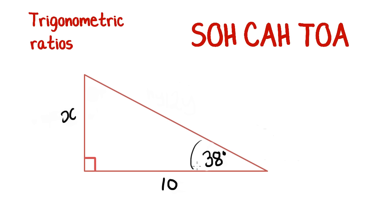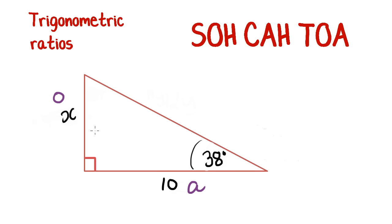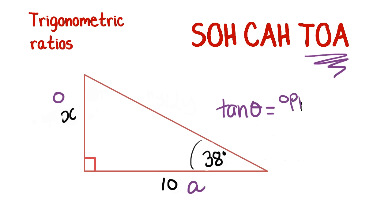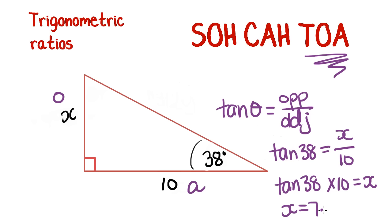Say we have an angle of 38 degrees and we're trying to find X, where the hypotenuse doesn't factor in because it's not one of our two pieces of information. The side opposite our angle is the opposite, and the other is the adjacent, so we're dealing with O and A — tangent. Tan of 38 equals X over 10, so X equals tan 38 times 10, giving X equals 7.8.